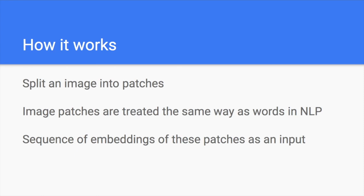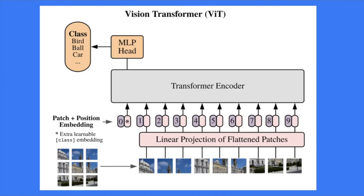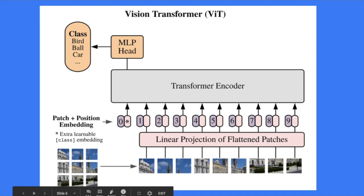You will have patch embedding layers, which are linear layers. Before you fit into the transformer blocks, the sequence of patches will each have their own vectors — a list of vectors where every patch is a vector. Then you have a list of vectors as the transformer input.